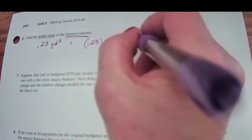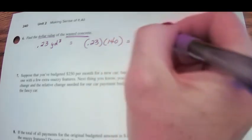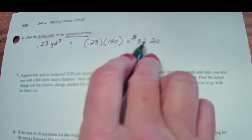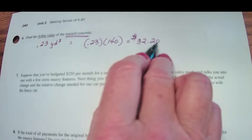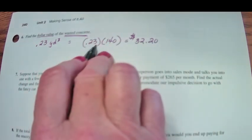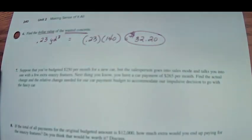So 0.23 of 140 is, of that $420, really $32.20 was kind of wasted. $32.20 was wasted on this little bit of concrete that we didn't actually need. That's basically just the cost of doing business.